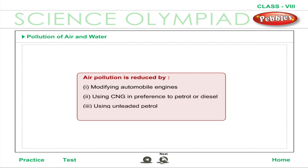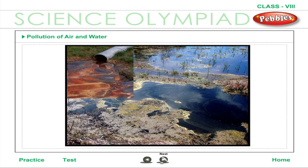Air pollution is reduced by modifying automobile engines, using CNG in preference to petrol or diesel, using unleaded petrol, and using cleaner sources of energy. The major sources of water pollution are industrial effluents and urban sewage.